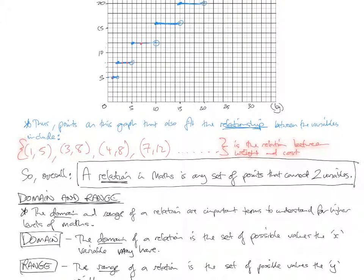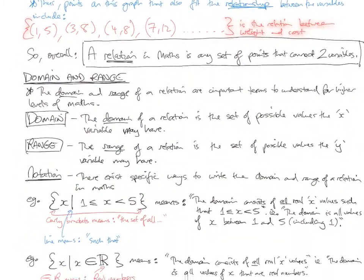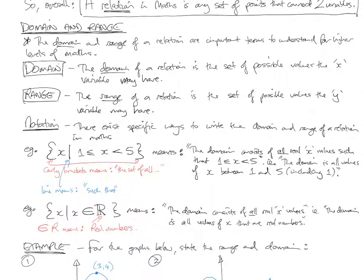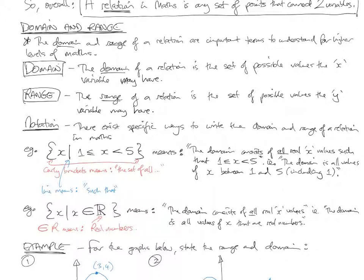So now that we've discussed what the idea of a relation is, we need to talk about some definitions: domain and range. The domain and range of a relation are important things to understand, because you will be dealing with them in higher levels of maths. The domain of a relation is the set of possible values that the x variable could have. The range of a relation is the set of possible values the y variable may have. When you're defining the domain and range, there are specific ways to write them down that you'll have to follow, because that's what's acceptable.